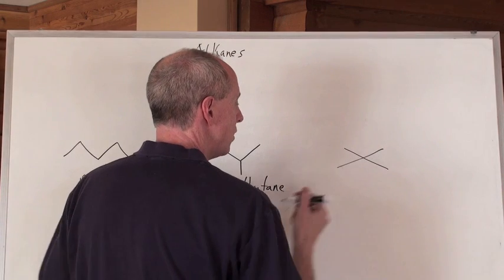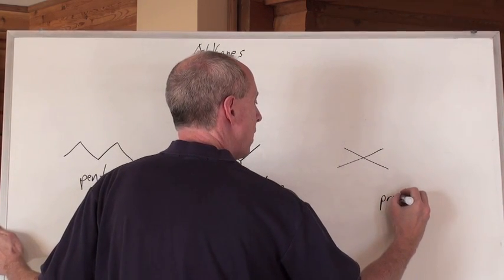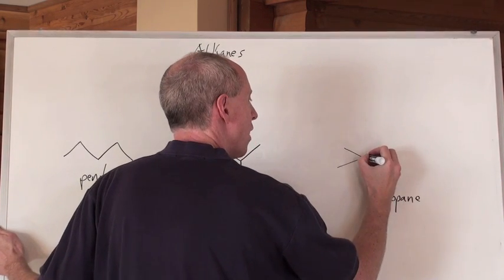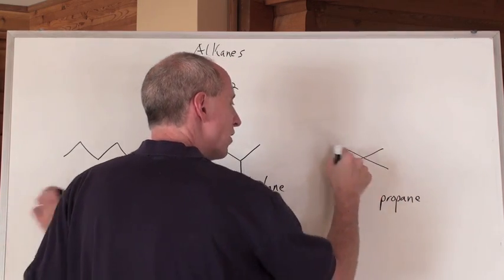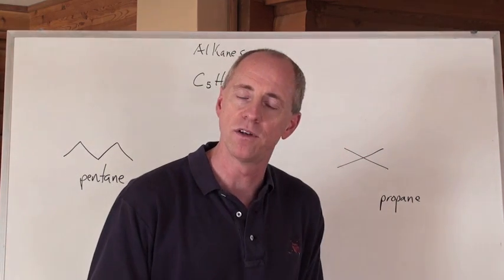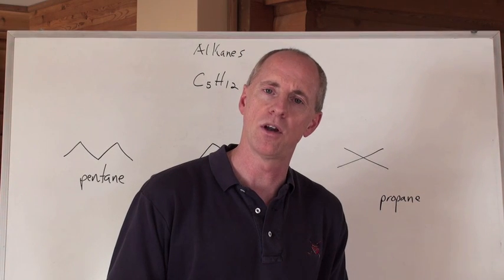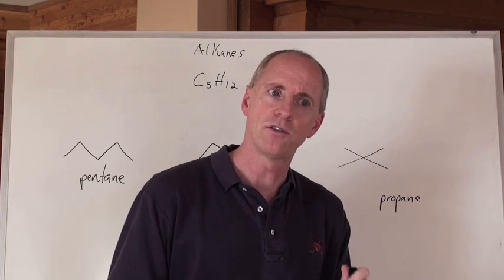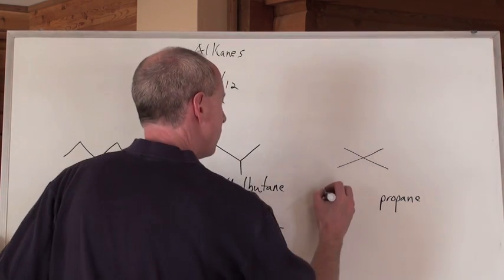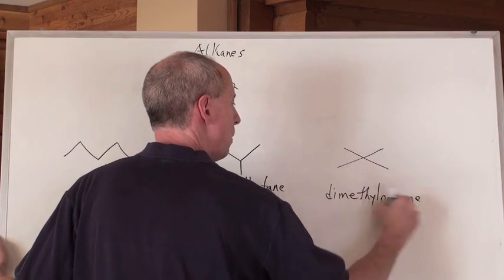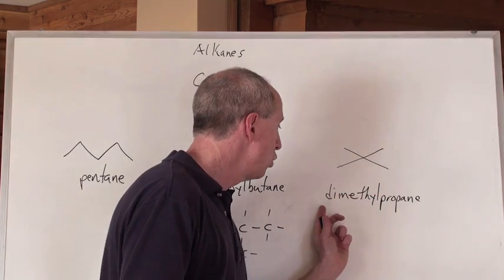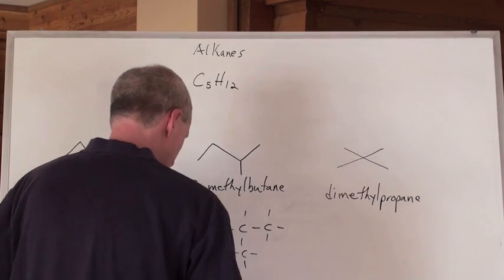Of what? One, two, three, longest continuous chain is propane. With a methyl branch, a C coming off of here and a C coming off of here. That's two methyl branches coming off. Two methyl branches coming off. So that means that there's two methyls. That means that there's a dimethylpropane. That's one word, by the way. Two methyls on a propane. How would that look here?